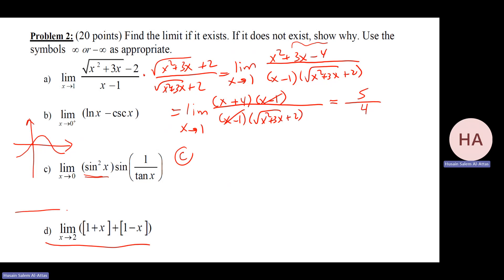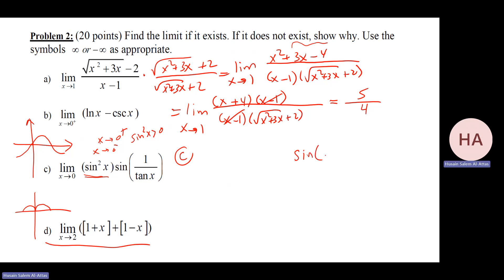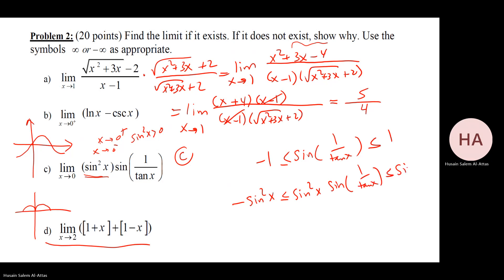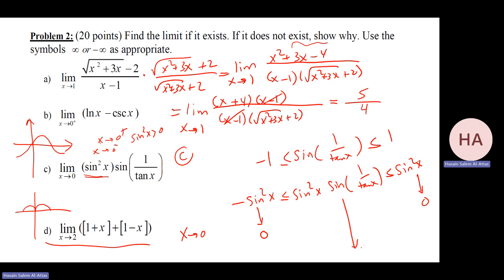For part c: sine squared is always positive. As x goes to zero from the right or from the left, sine squared does not affect the sign of the inequality. Apply squeeze theorem: sine of one over tan x is between minus one and one. Multiply by sine squared, which is positive — no sign change. As x goes to zero, this goes to zero and this goes to zero, so by squeeze theorem the limit equals zero.